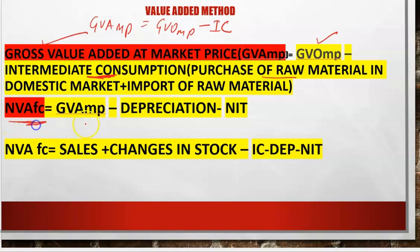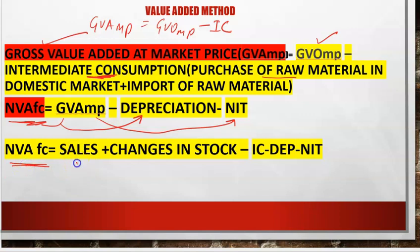Now for conversion: to get NVAFC from GVAMP — that is, going gross to net — subtract Depreciation, as done in other methods. Then subtract NIT (Net Indirect Taxes = Indirect Taxes minus Subsidies) to move from market price to factor cost. You can learn this combined formula directly: NVAFC = Sales + Change in Stock − Intermediate Consumption − Depreciation − NIT.